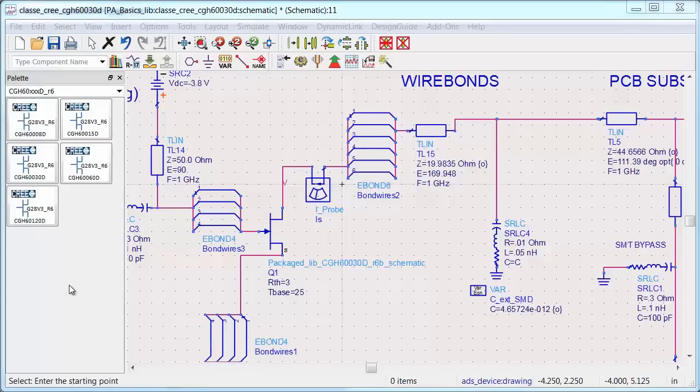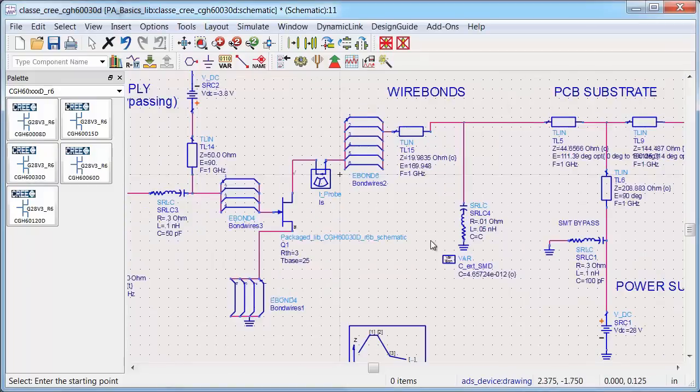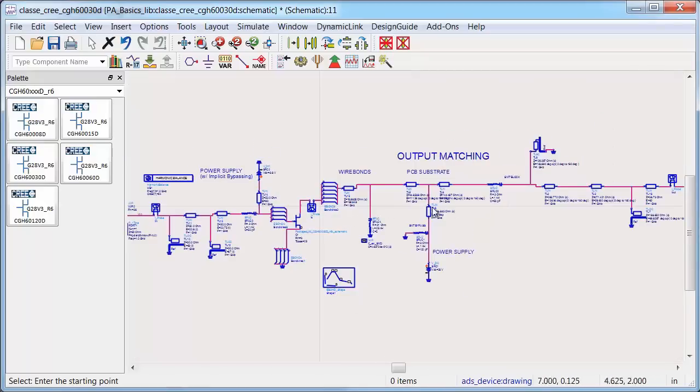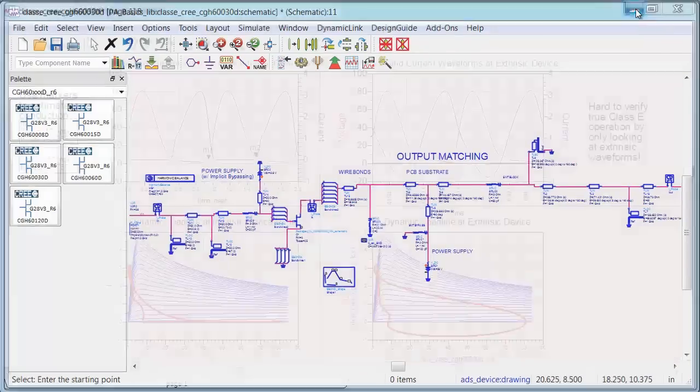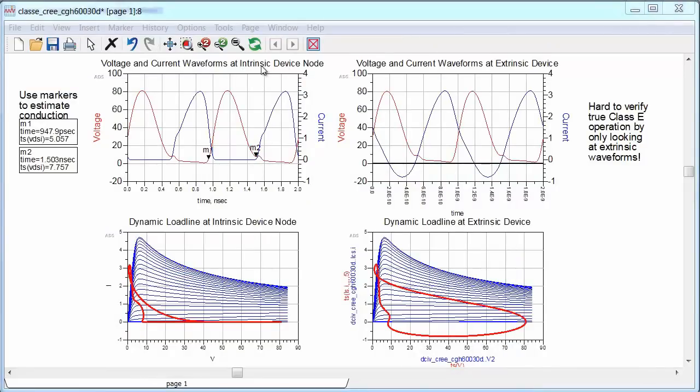To give you another data point, I went to Cree's website, registered for access, and downloaded a model for the CGH60030D. This is a gallium nitride HEMT. And I followed the same design procedure to design a class E power amplifier with this device, with bond wires and transmission line matching included. And I picked Cree because they give designers information about the parasitics, and they also provide access to the internal current source. These are must-haves for class E PA design.